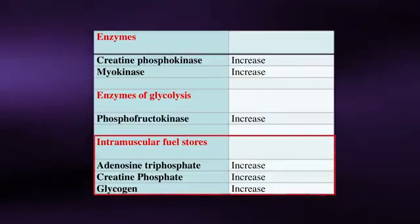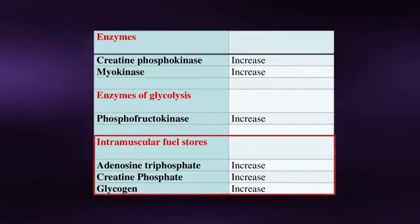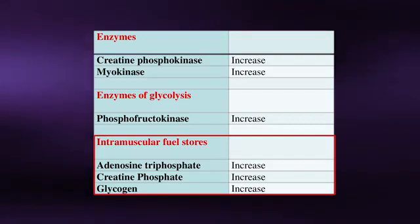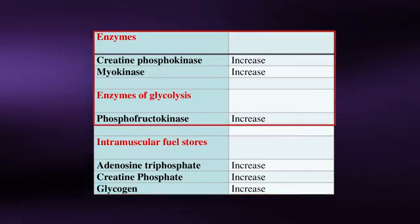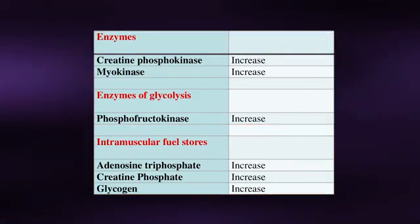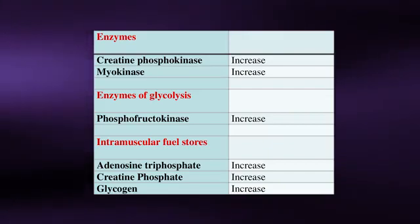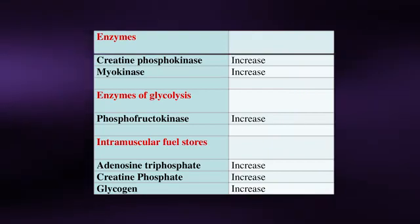As lifting weights relies predominantly on the anaerobic pathways for ATP production, it is not surprising to find that these metabolic systems adapt to a strength training program. The intramuscular concentration of our immediate energy stores, including ATP and creatine phosphate as well as glycogen, all increase with training. Further, the enzymes involved in the breakdown of these stores for ATP production increase as well. This will allow for more rapid and extensive production of ATP to meet the energetic needs during this type of power generating activity.